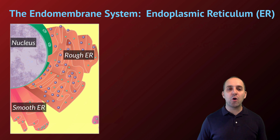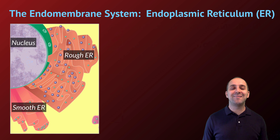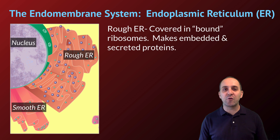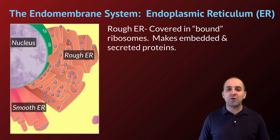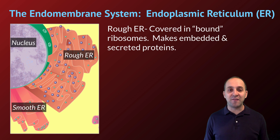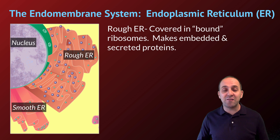Moving on in our endomembrane system, we come to the endoplasmic reticulum, which is broken into the rough endoplasmic reticulum and the smooth endoplasmic reticulum. These terms refer to their appearance. The rough endoplasmic reticulum looks rough because it's covered in ribosomes attached to it — these are called bound ribosomes, and they're making any proteins that are either going to be inserted into membrane or secreted from the cell. This is different from free ribosomes, which float in the cytoplasm making proteins that will remain there.